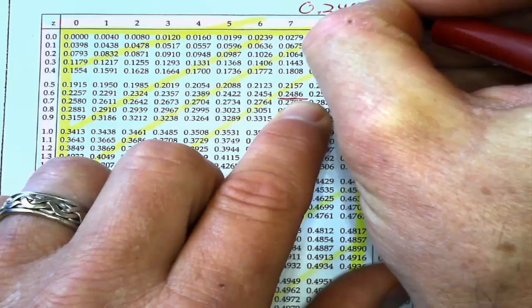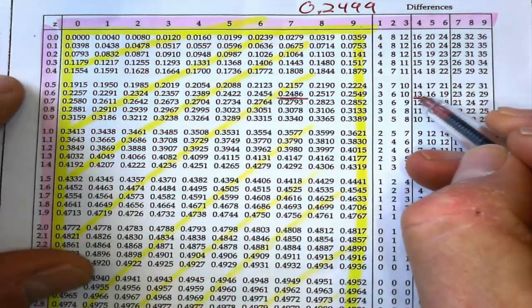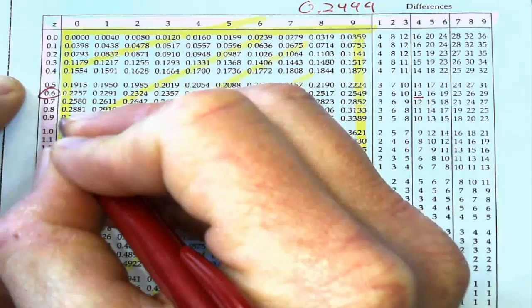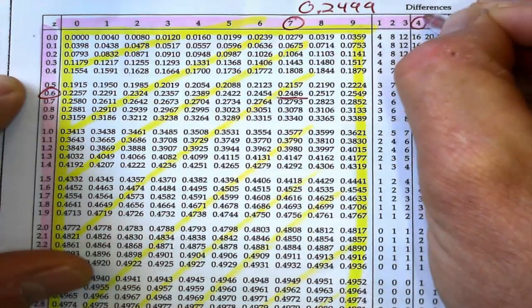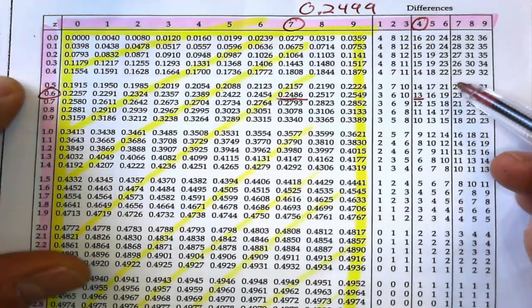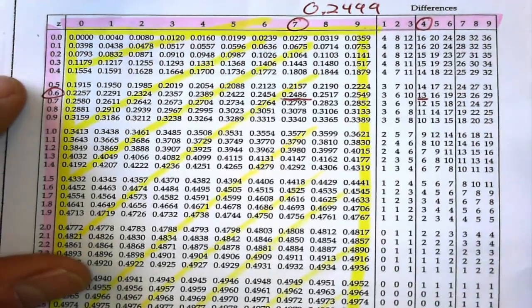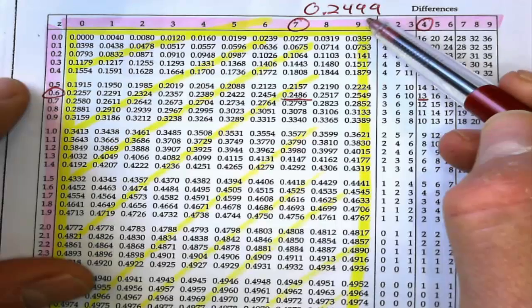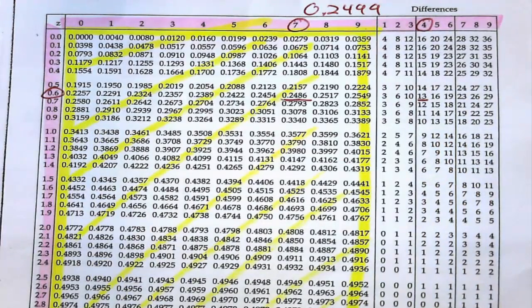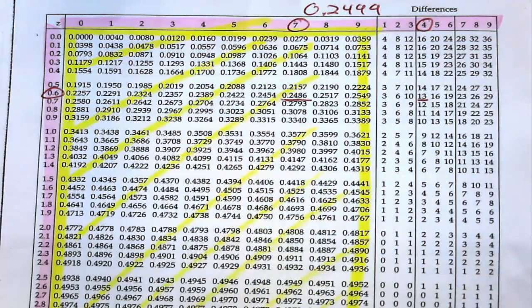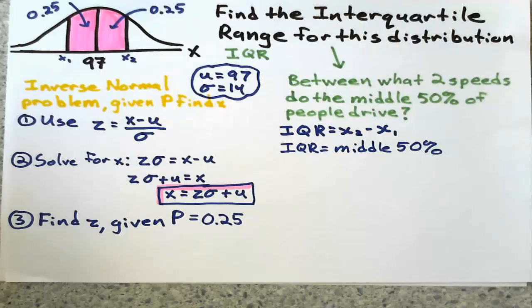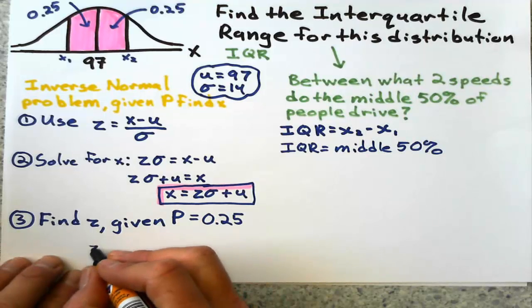That means my Z value is 0.674. That's with the table. With a graphics calculator, you'll get it to about eight decimal places. 0.674 is what we'll use using the table.